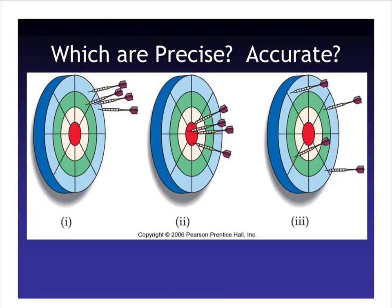In this next example, which ones are precise and which are accurate? In our first example, we have some precision but no accuracy — we're not hitting the target, but our arrows are close together. In our second example, all arrows are hitting the target and they are together, so we have precision and accuracy. In the last one, we do not have either — we're not hitting the target and none of our arrows are hitting the same area, so none are precise or accurate.